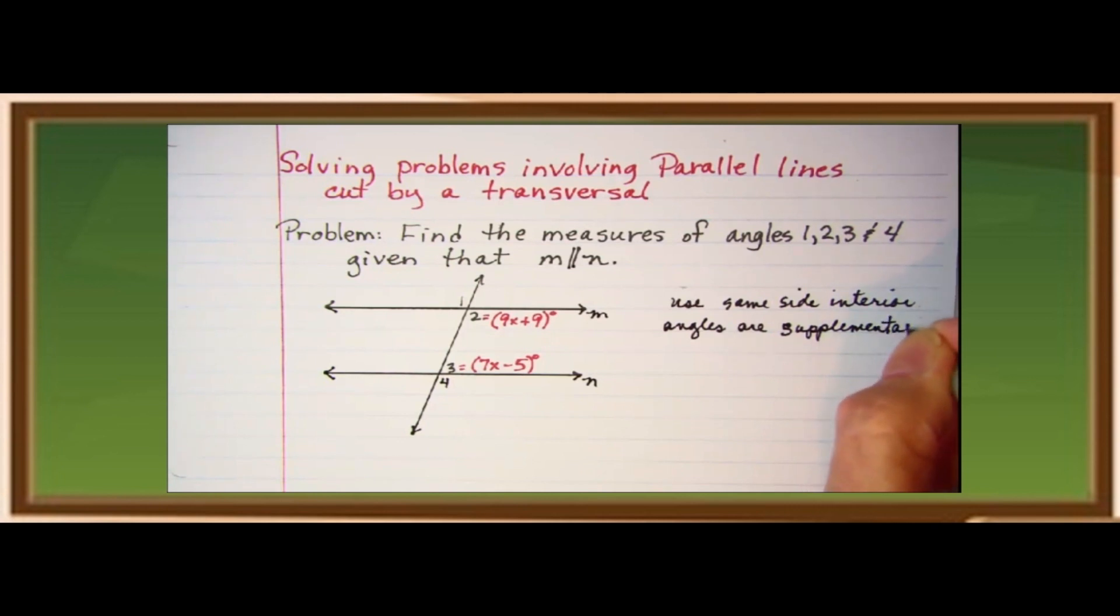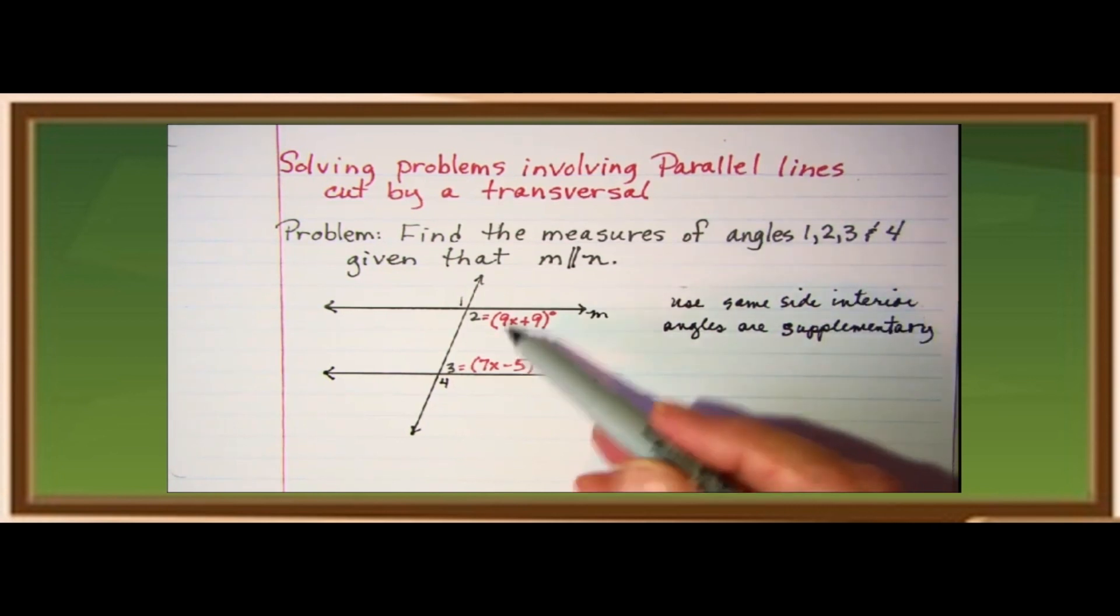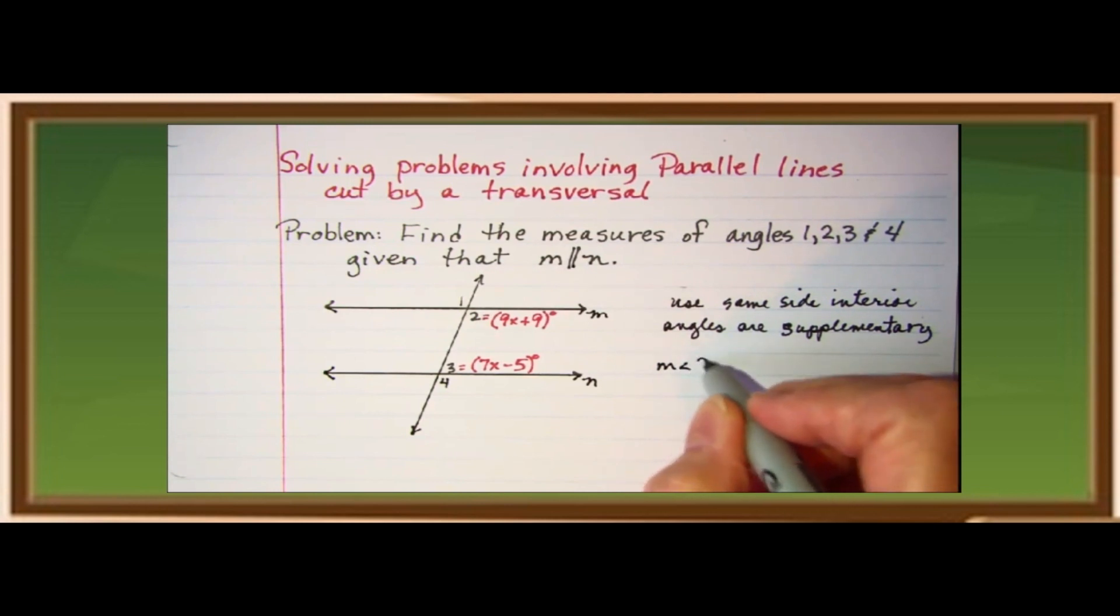Same side interior angles are supplementary. Okay, so same side interior angles would be angles one, angles two, and angles three. So, the measure of angle two plus angle three is equal to 180.